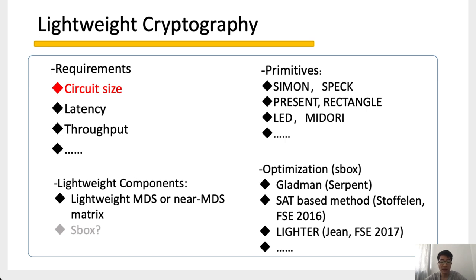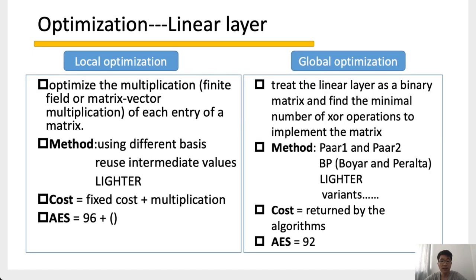Jim presented an exhaustive search method for small S-Boxes. As for the linear layers, there are two methods for optimization: the so-called local optimization and the global optimization. In this talk, we focus on the global optimization and present a heuristic search algorithm.